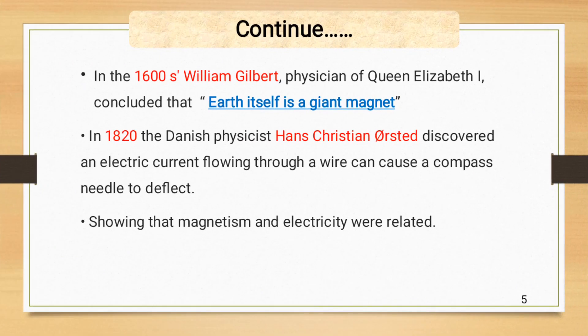In the 1600s, William Gilbert, the physician of Queen Elizabeth, concluded that Earth itself is a giant magnet, and it has also two poles, North Pole and South Pole.